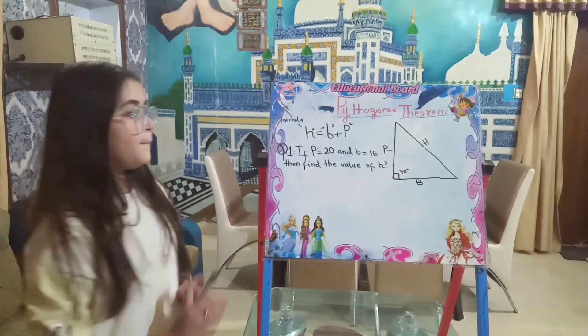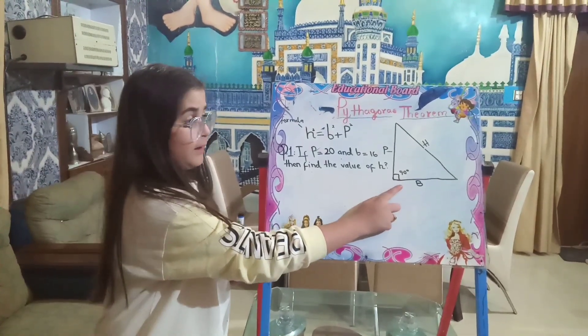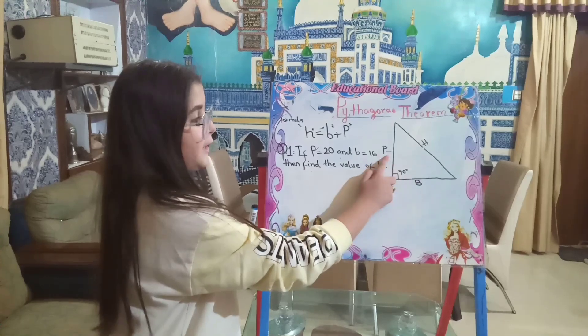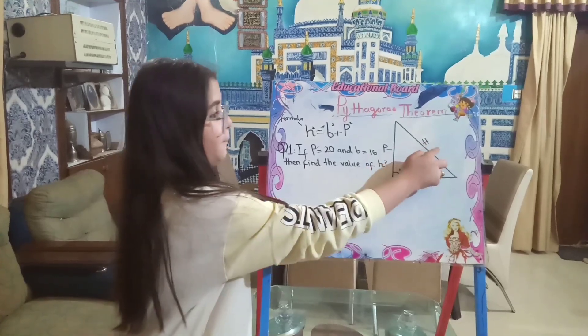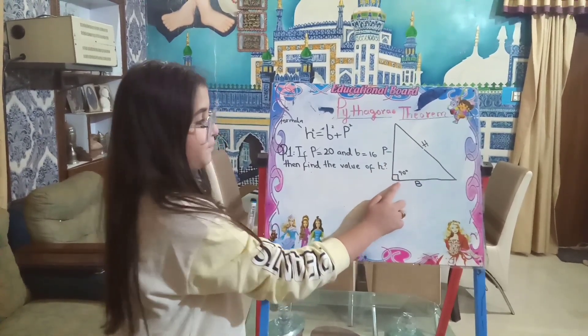So for example, this is the triangle — this is the base, perpendicular and hypotenuse. This is the 90 degree angle.